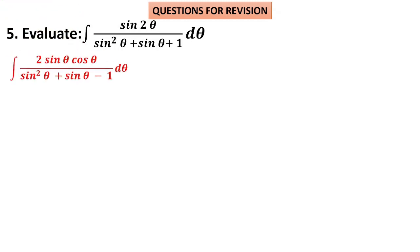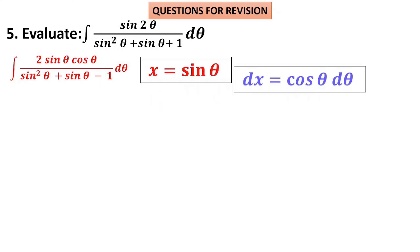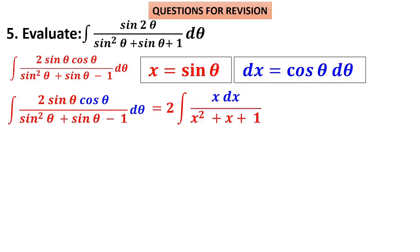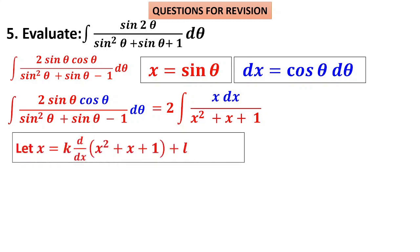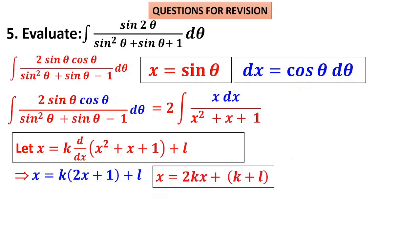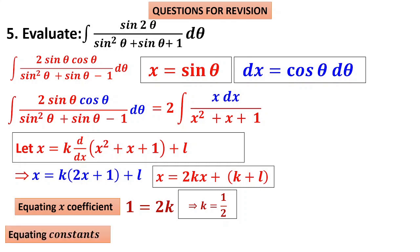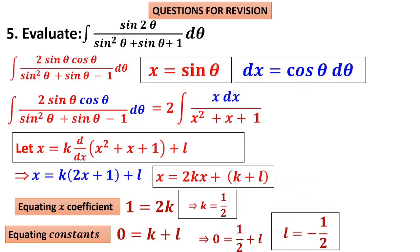Problem 5: ∫sin2θ/(sin²θ+sinθ+1)dθ. Write sin2θ = 2sinθcosθ. Substitute x = sinθ, dx = cosθdθ. The integral becomes ∫2x dx/(x²+x+1) = ∫x dx/(x²+x+1) (after simplification). Write x = k·(2x+1) + l. Equating x coefficients: 1 = 2k, so k = 1/2. Equating constants: 0 = k+l = 1/2+l, so l = −1/2.